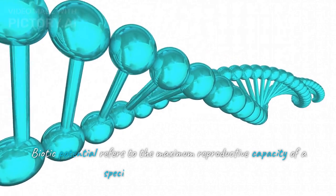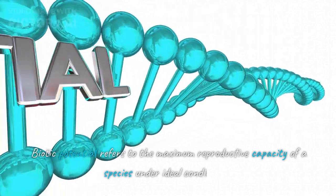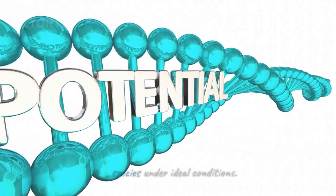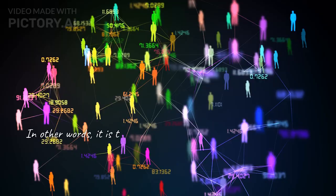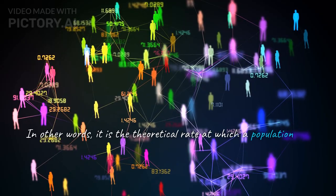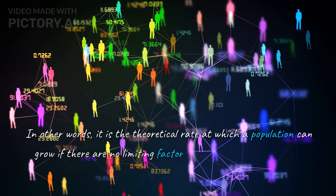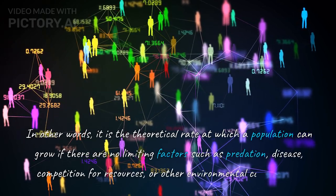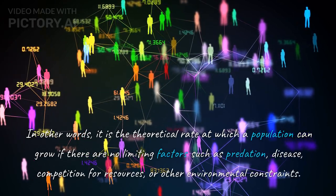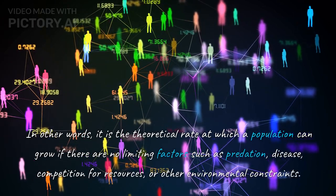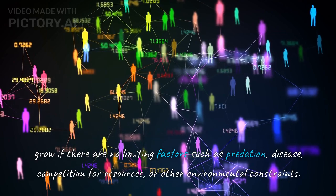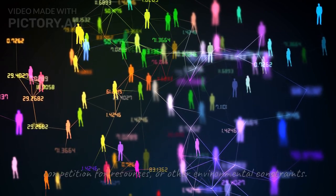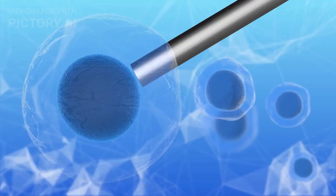Biotic potential refers to the maximum reproductive capacity of a species under ideal conditions. In other words, it is the theoretical rate at which a population can grow if there are no limiting factors such as predation, disease, competition for resources, or other environmental constraints.